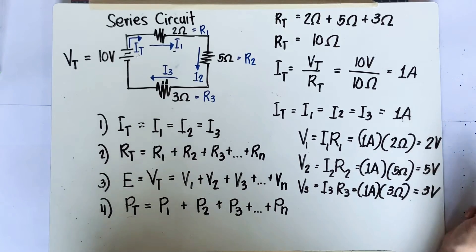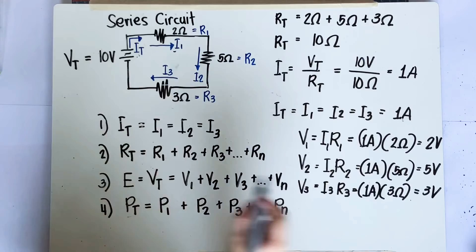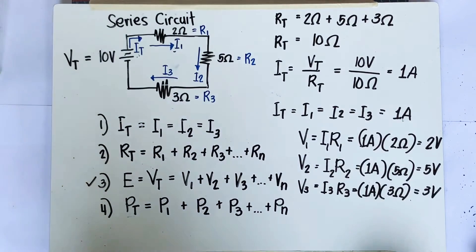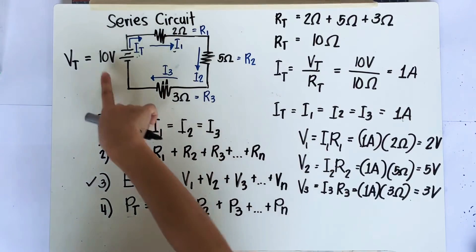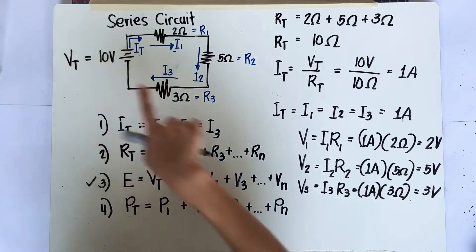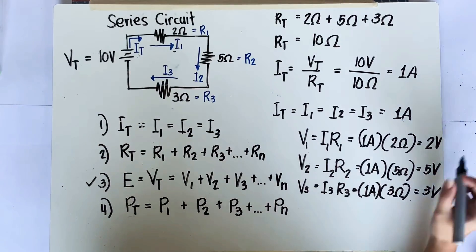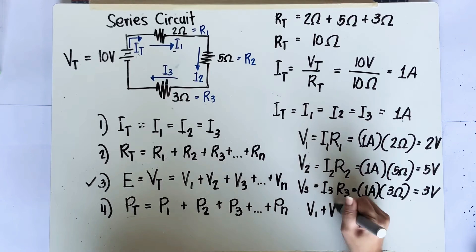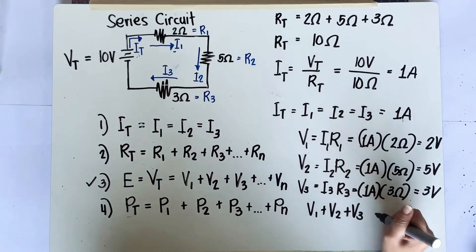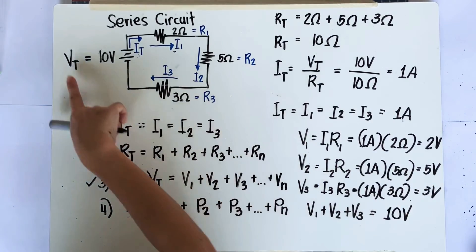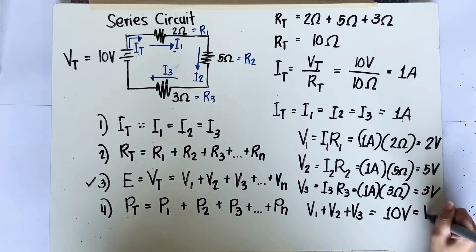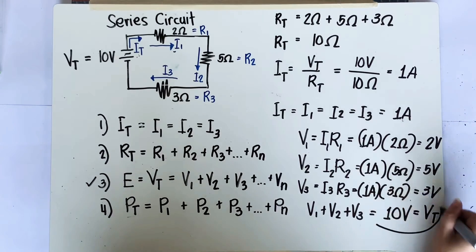To validate our answers, we apply the third governing law: the sum of voltage drops must equal the applied voltage. V1 + V2 + V3 = 2 + 5 + 3 = 10 volts, which is indeed the total applied voltage. This confirms our calculations are correct.